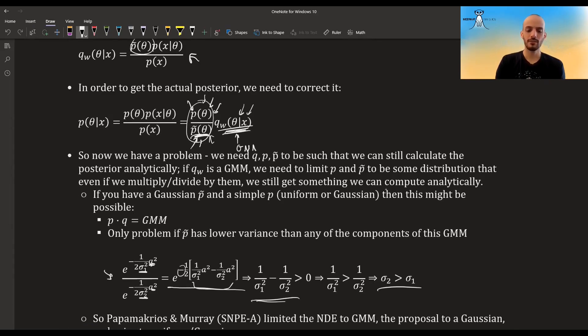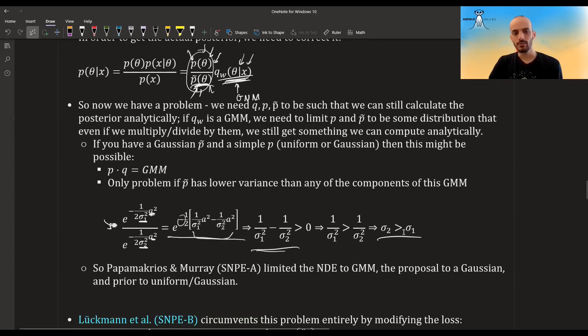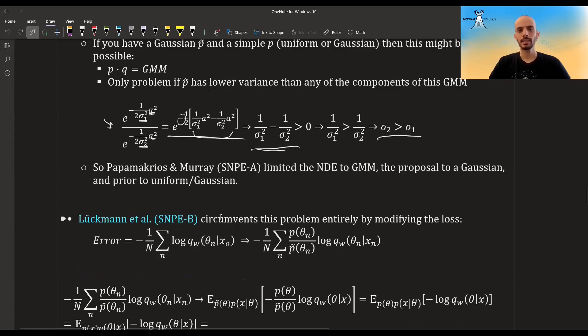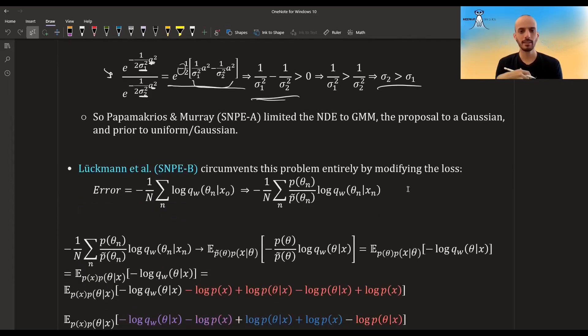If you keep the neural density estimator—the q—to be a GMM, and if you only use a Gaussian proposal and a Gaussian or uniform prior, then you can use this algorithm. Then Lueckmann and associates from the second group in Tübingen came and they circumvent this problem by just modifying the loss.